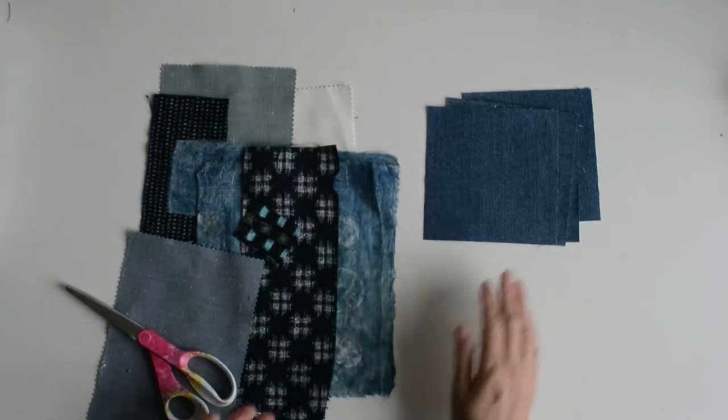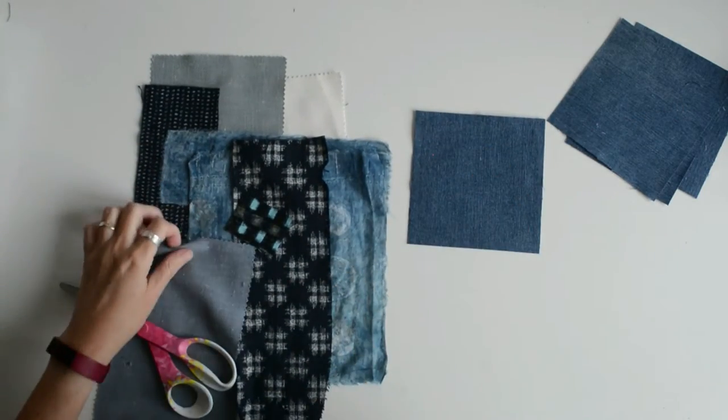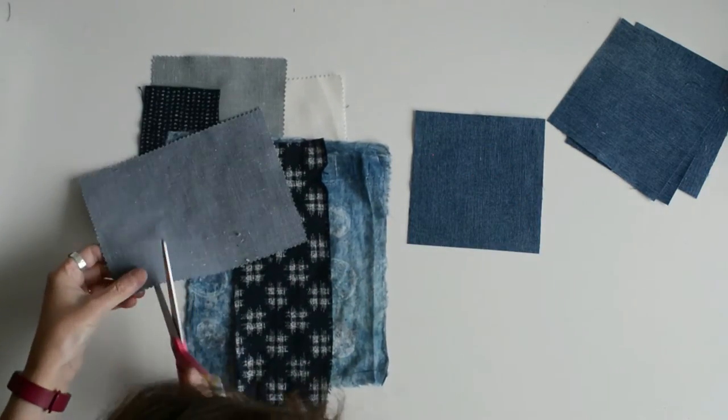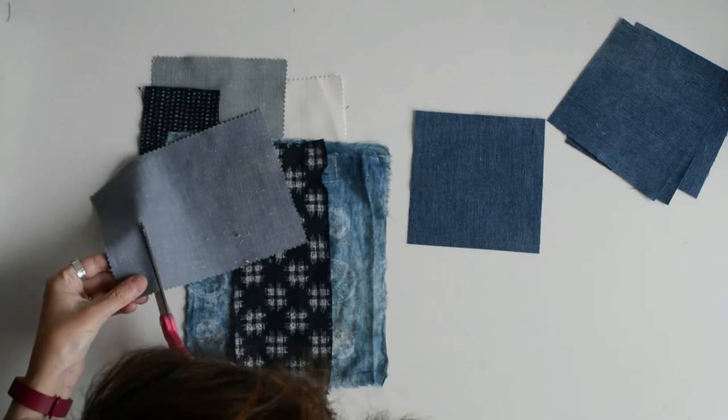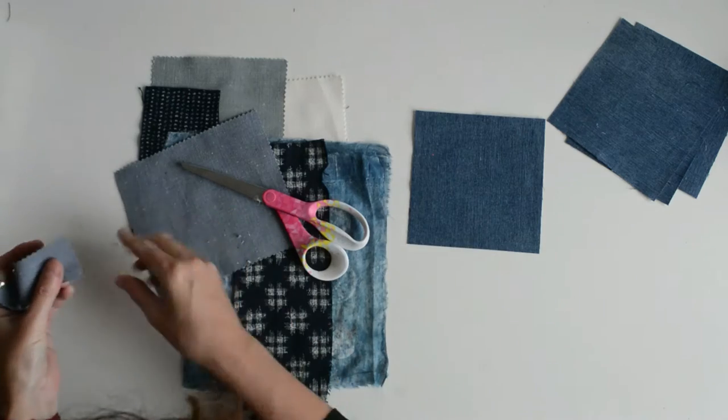Once you have your four squares of denim, we're going to play with some fabric scraps. I've got some pieces of linen here, cuts of fabric from making clothes, and some mud resist dyed fabric from a course I did.